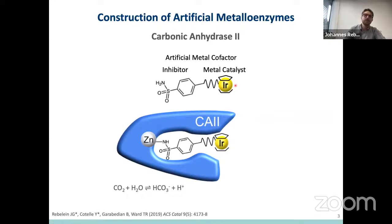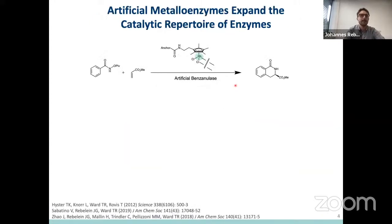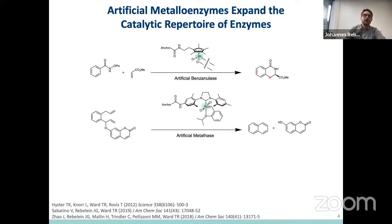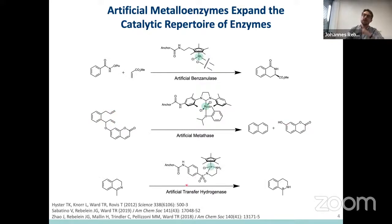Using this and similar approaches, the Ward lab has constructed various artificial metalloenzymes, such as the artificial benzanolyse based on rhodium, as shown here; artificial metathases based on rhodium, which catalyze a ring-closing metathesis releasing a product, here fluorescent umbelliferone; or artificial transfer hydrogenases based on iridium, as shown on the second slide.